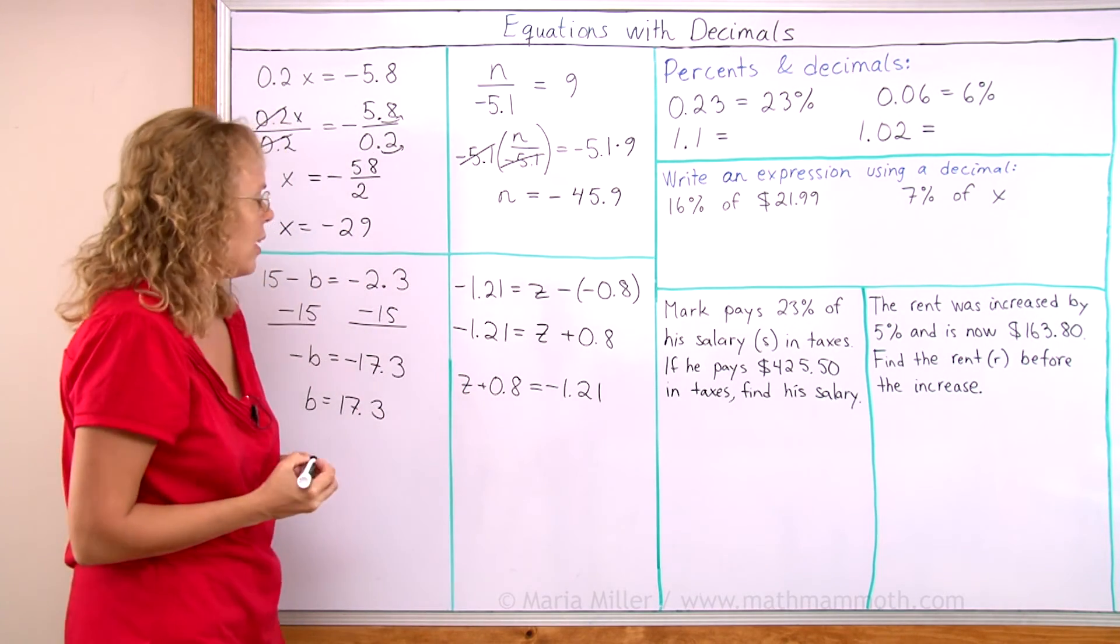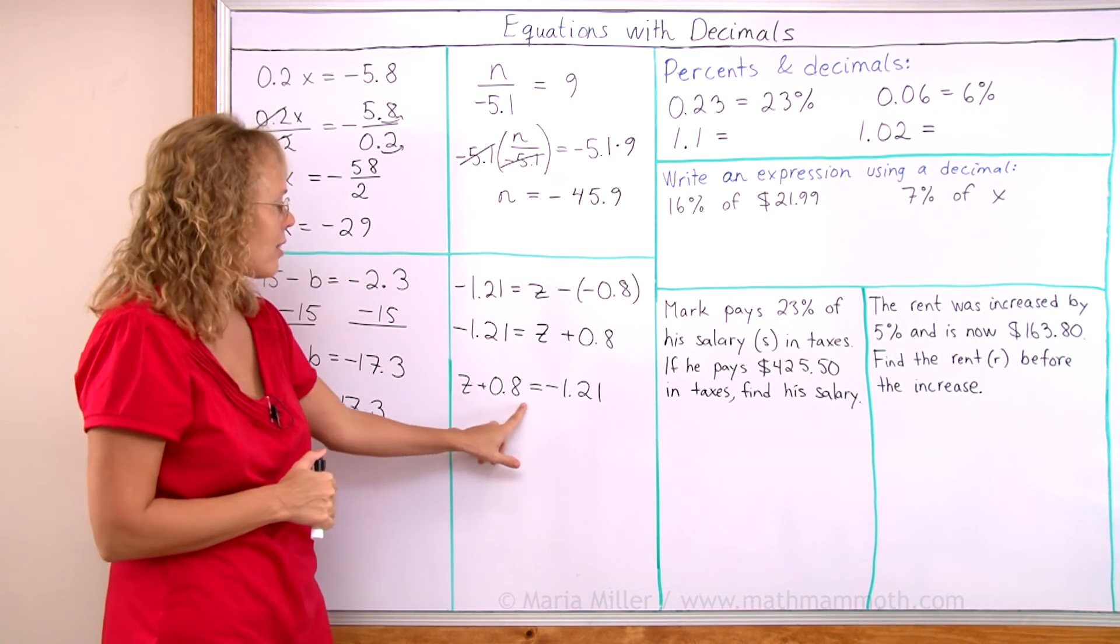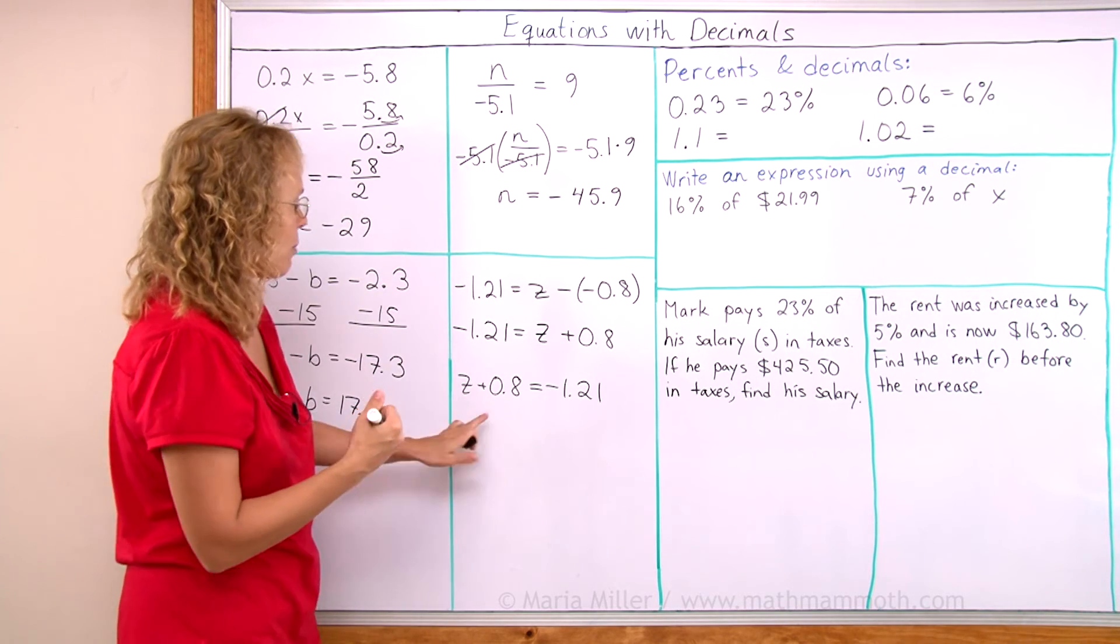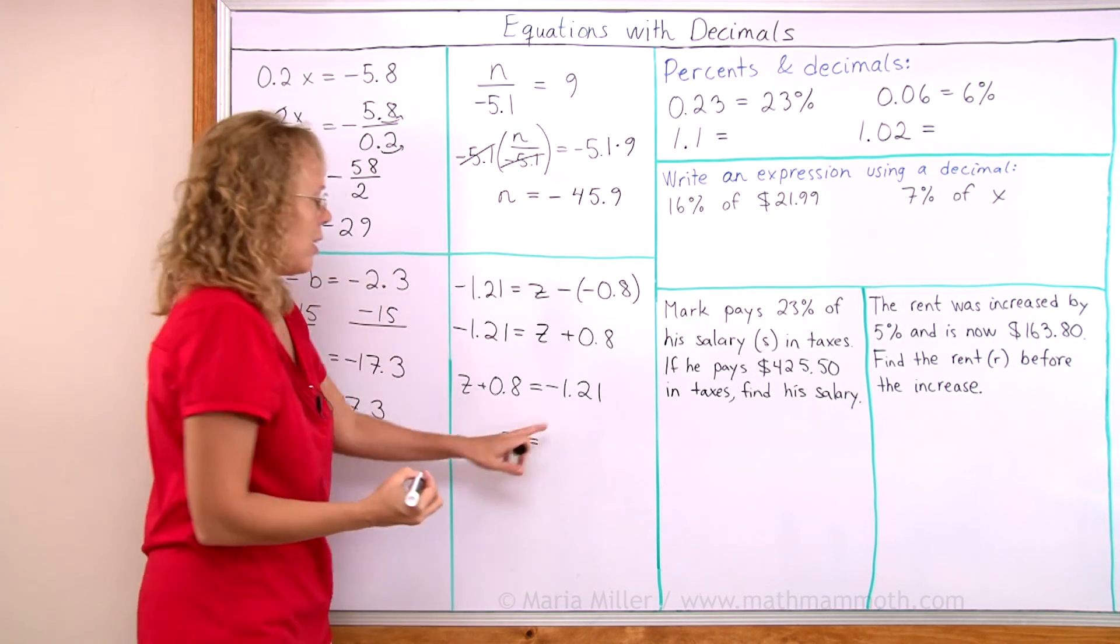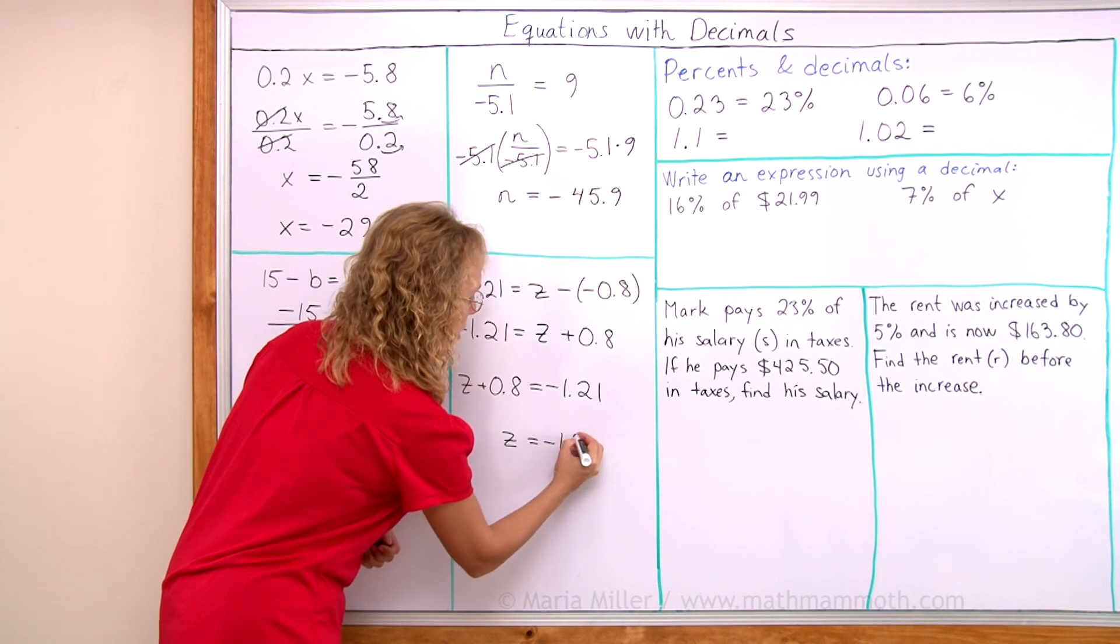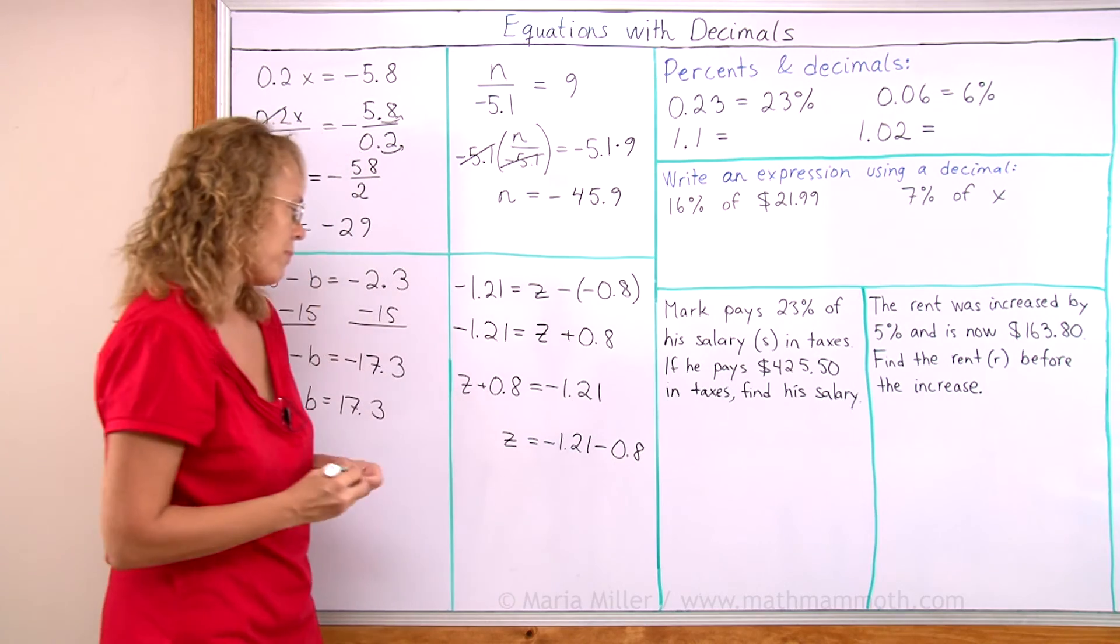And now it is a simple addition equation so we just subtract from both sides this number. So I subtract 8 tenths. It leaves z alone here. And this side I have this number but I have to subtract 8 tenths.